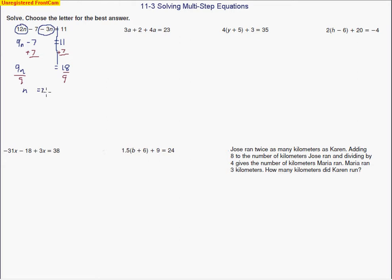Let's check to make sure it makes sense. We substitute 2 back in: 2 times 12, minus 7, minus 3 times 2 equals 11. So we get 24 minus 7 minus 6. Negative 3 times 2 makes 6. Subtracting 7 gives us 17 minus 6, and that does give me 11. When the two numbers agree, we know we've got the right answer.